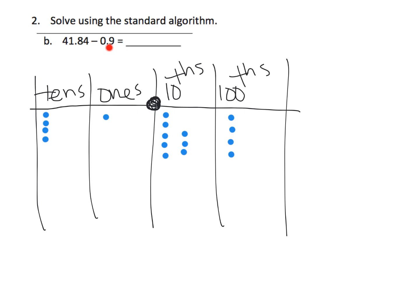Now it says to take away nine tenths. Well, we don't have nine tenths — we only have eight. So what we're going to have to do is take this one and cash him in. When we cash him in, we're going to get over here ten tenths: one, two, three, four, five, six, seven, eight, nine, ten. So now I've cashed him in — he's no longer there.